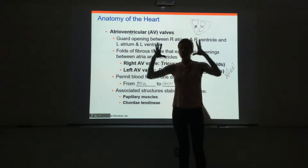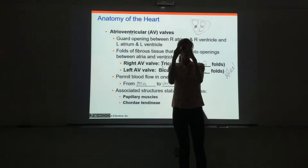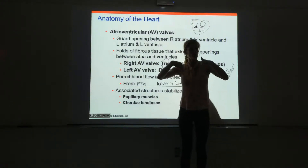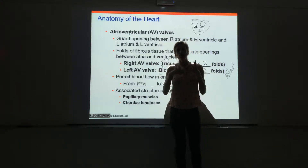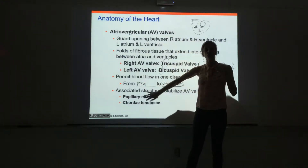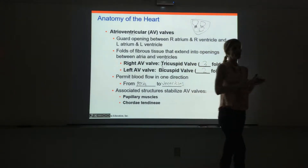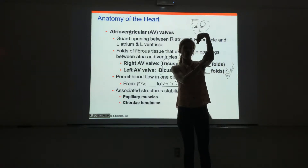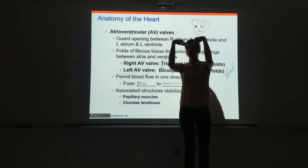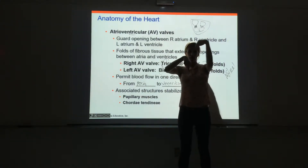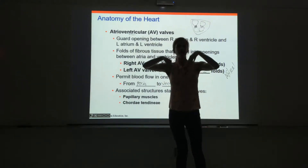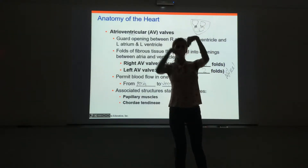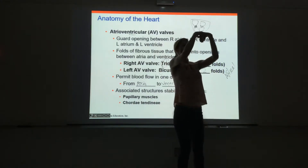If the valves were just flaps, when the ventricle contracts and produces force, that force would blow the flaps up like saloon doors swinging back and forth. So we need to secure them. We have associated structures: chordae tendinae and papillary muscles. Together, they grab onto the free end of the flaps and secure them to the heart wall. This allows blood to flow down from the atria to the ventricle, and when the ventricle contracts, the flaps push up and are secured — creating a perfect seal.